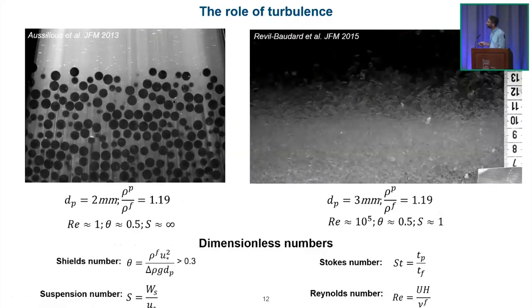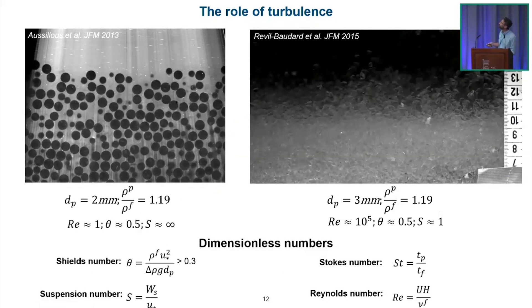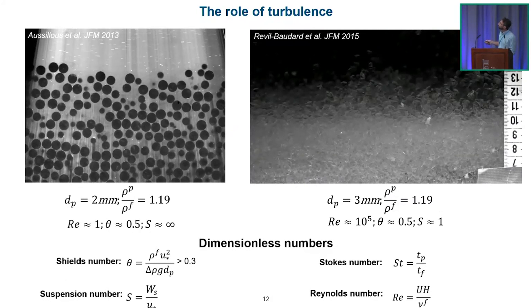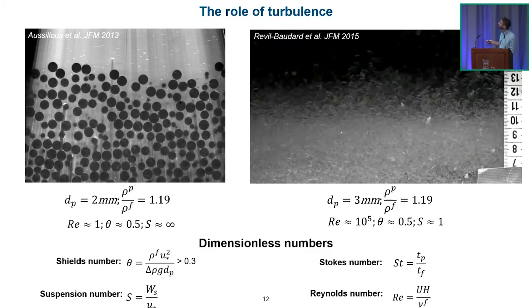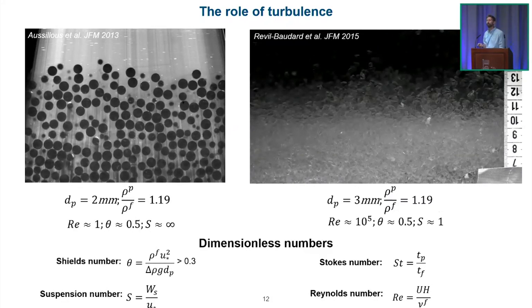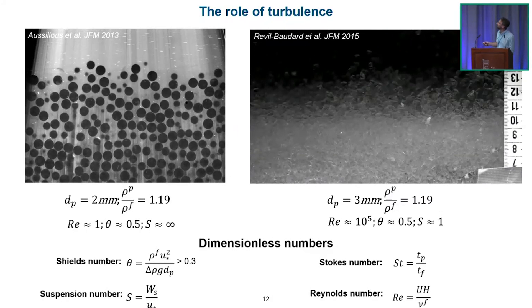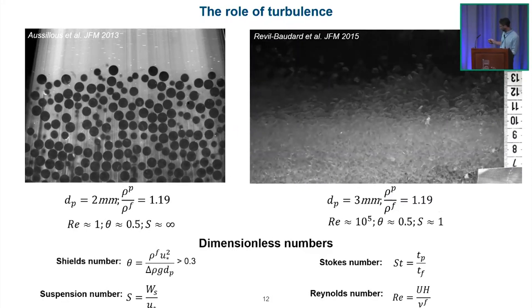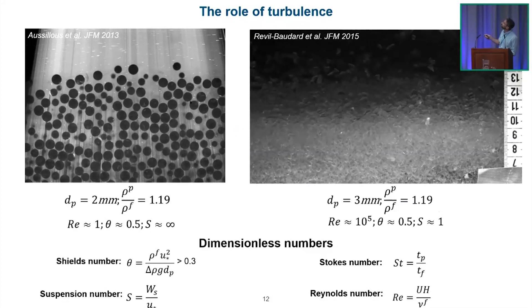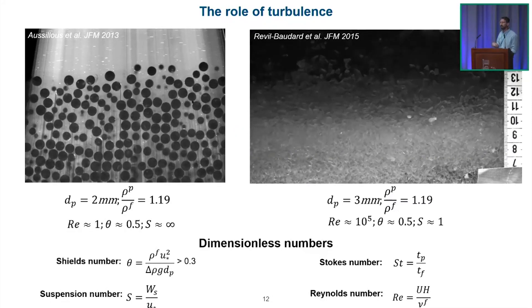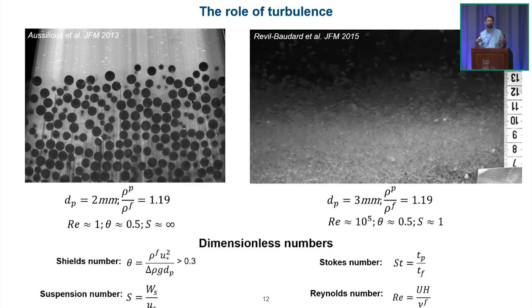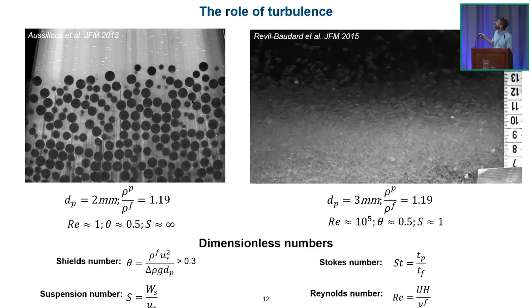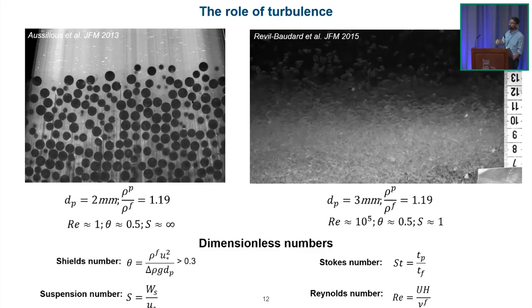On the left is the laminar flow movie. On the right are similar particles — three millimeters in size, same density ratio — but the Reynolds number is five orders of magnitude larger. Looking at the movie, in the dense regime near the bed there are frictional interactions and possibly collisions. Above, particles are transported by turbulent eddies away from the bed. This is the complexity we need to model to reproduce sediment transport in the real world.